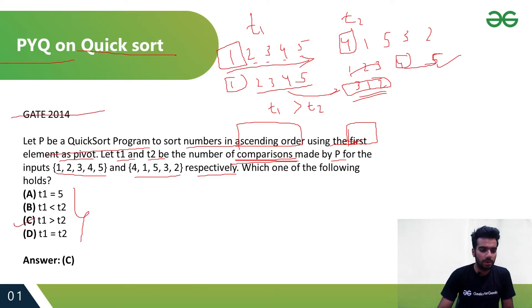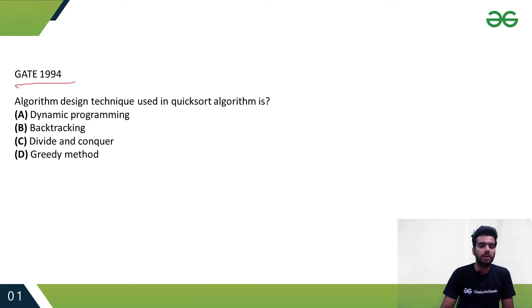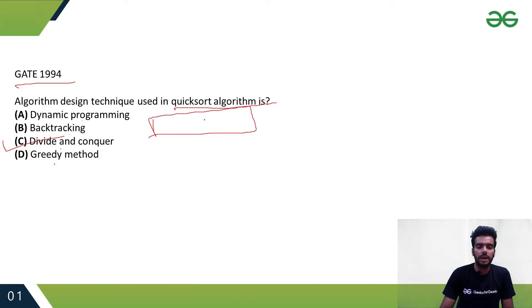So the answer is C: the number of comparisons for t1 is greater than t2. Now let's see one more question — GATE 1994. It asks: the algorithm design technique used by quicksort is — dynamic programming, backtracking, divide and conquer, or gradient methods? Quicksort uses divide and conquer because it picks a pivot element, places it in its correct position, divides the array into two halves, and recursively calls quicksort on both halves.